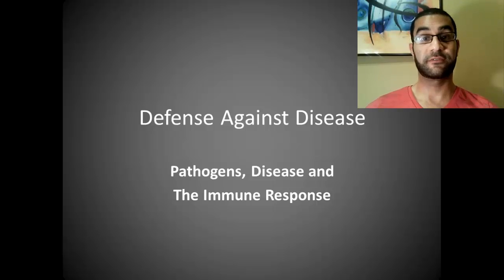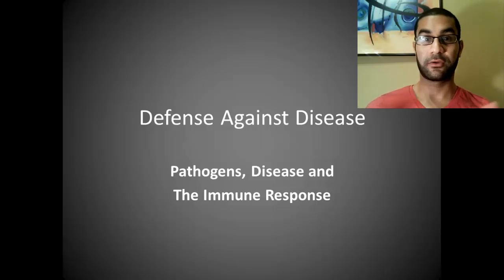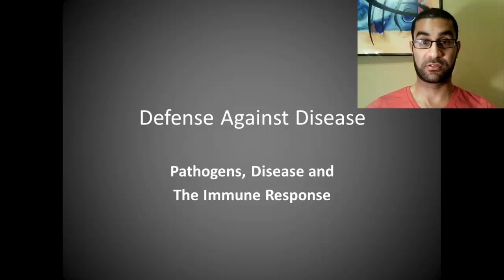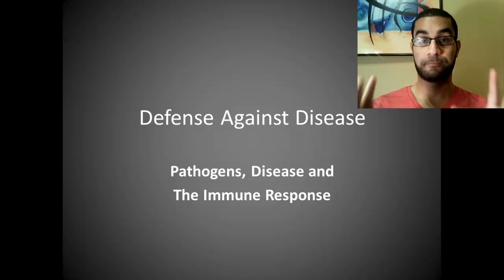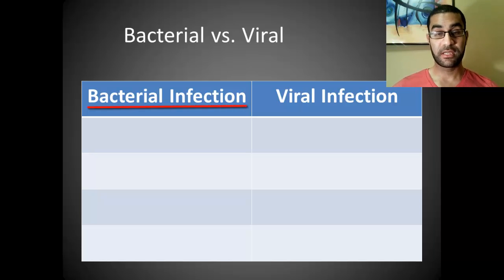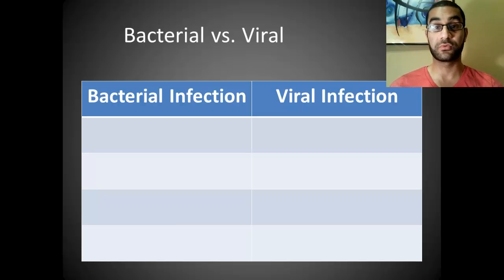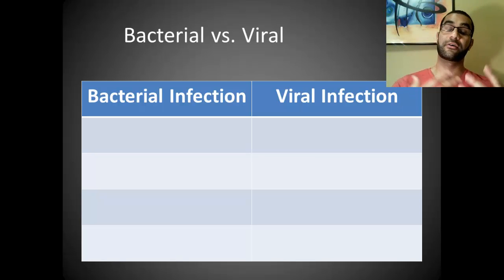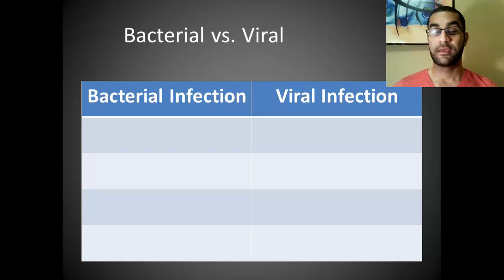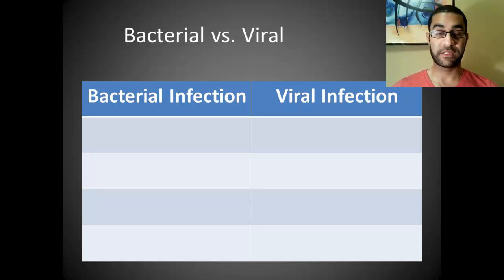Before we get into that, we need to first discuss the difference between the two general categories of infections. In previous videos, we talked about multiple categories of possible pathogens. But really, with humans, it pretty much comes down to two types of infections. Most of the time that you would get sick as a human, it all comes from these two categories: bacterial infections and viral infections.